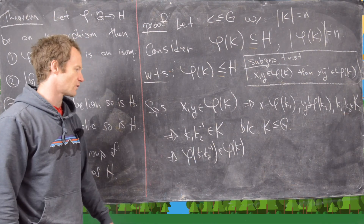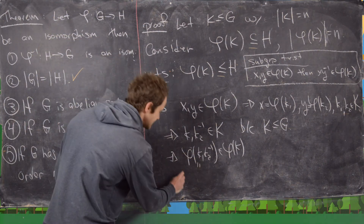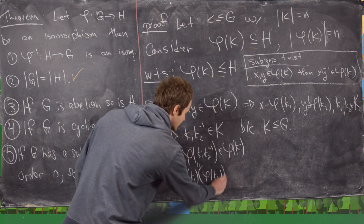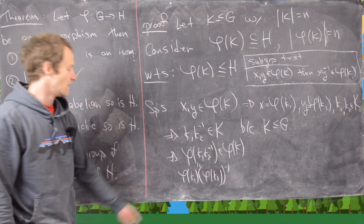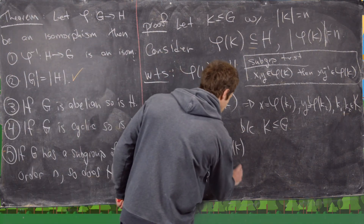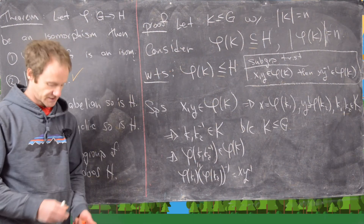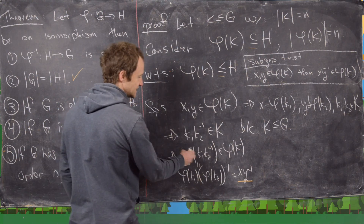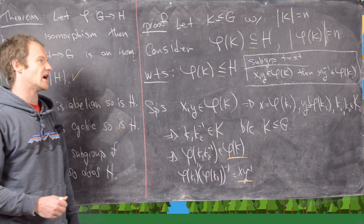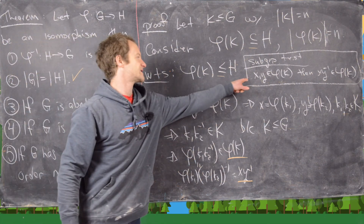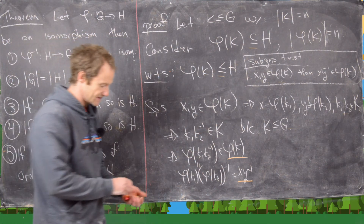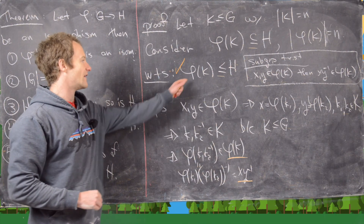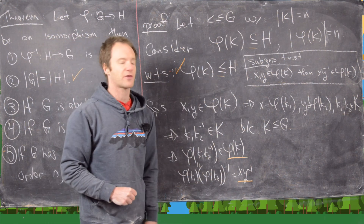Using the isomorphism rule, phi(k₁ k₂ inverse) equals phi(k₁) times phi(k₂) inverse, which is exactly X times Y inverse. Reading this chain: XY inverse equals phi(k₁) phi(k₂) inverse, which is an element of phi(K). So by the subgroup test, phi(K) is in fact a subgroup of H — a subgroup of H with order n. That finishes all five statements of the theorem.